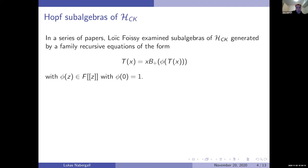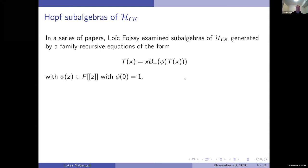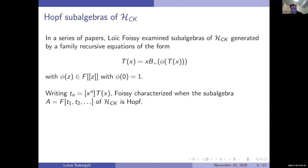These subalgebras are generated by a family of recursive equations of the following form: T(x) equals x times B+ applied to φ(T(x)), where φ is some formal power series with a nonzero constant term, setting it equal to one. This gives a formal power series solution with coefficients in Connes-Kreimer. Writing T_n for the nth coefficient, Foissy characterized when the subalgebra generated by those T_n's is a Hopf subalgebra.